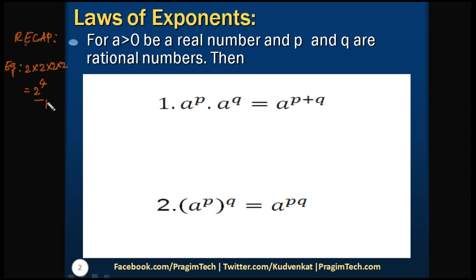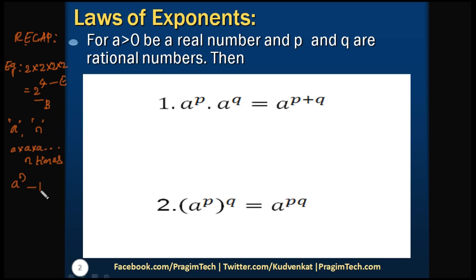Here, 2 is the base and 4 is the exponent. In general, if a number 'a' is multiplied by itself n times — a × a × a × ... (n times) — we can represent it as a to the power of n, where a is the base and n is the exponent. Here a and n are natural numbers, as you have studied in earlier classes. Now let's extend the laws of exponents to rational numbers.